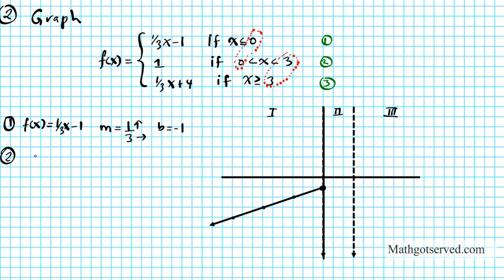Now let's move on to the second function. We have f(x) equals 1. This is a flat line — the slope is zero and you're starting from the y-intercept, which is one. So you never rise; you just keep running one unit forever. Our graph is going to be restricted to the middle region. We start from one on the y-axis, and since there's no rise, we just keep running — giving us a horizontal line.